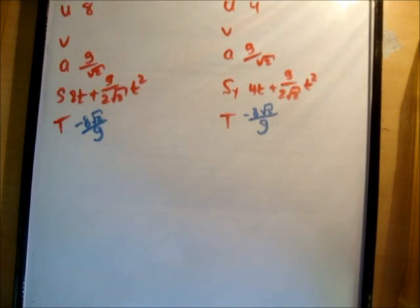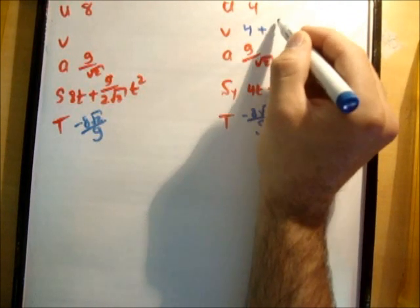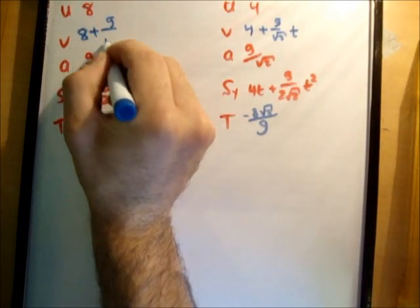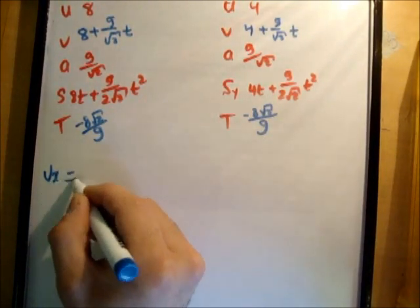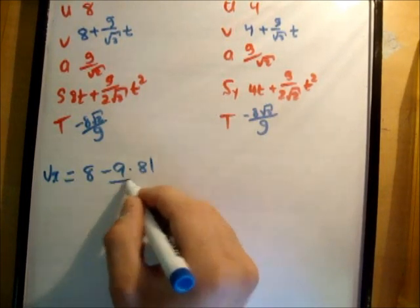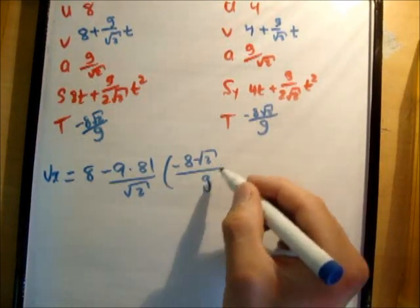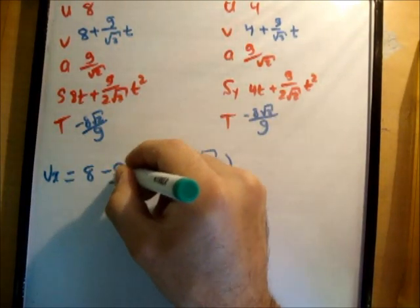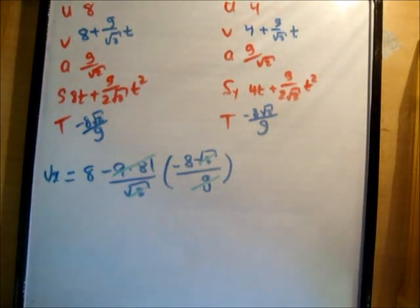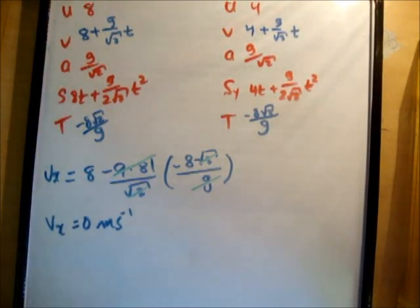So all we need to do now is find the velocity vectors. So v is equal to u plus at. v sub x is equal to 8 plus g over root 2 times t. So v sub x is equal to 8 minus 9.81 over root 2 times minus 8 root 2 over g. Now, of course, that 9.81 and that g can cancel. The root 2s can cancel. So we have 8 minus 8 and we get v sub x is equal to 0 meters per second, which is correct.